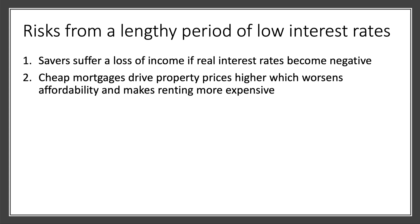Cheap mortgages — a lower mortgage rate might make it easier to take out a home loan, but it depends on whether you can afford the loan in the first place. Cheap mortgages tend to drive property prices higher, which worsens affordability — people have to borrow more to get a mortgage. If property becomes less affordable, more people have to rent. Demand for rented property goes up, renting becomes more expensive. So you can make a plausible case that low interest rates have made renting less affordable, which is damaging particularly for families who can't afford to buy.